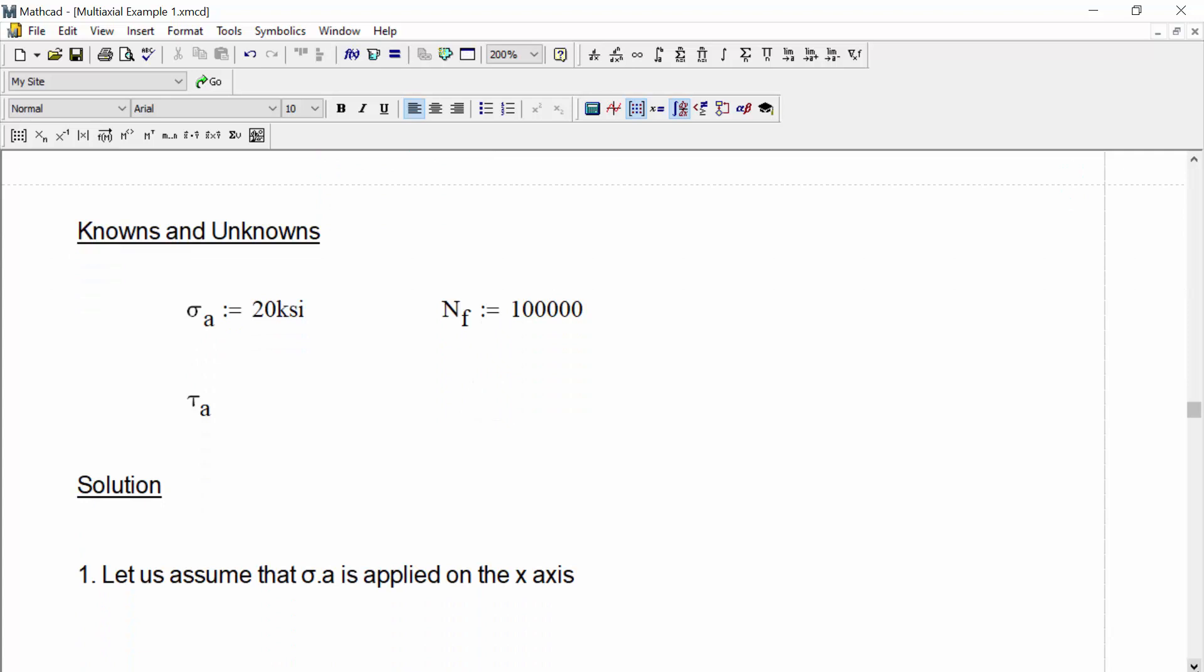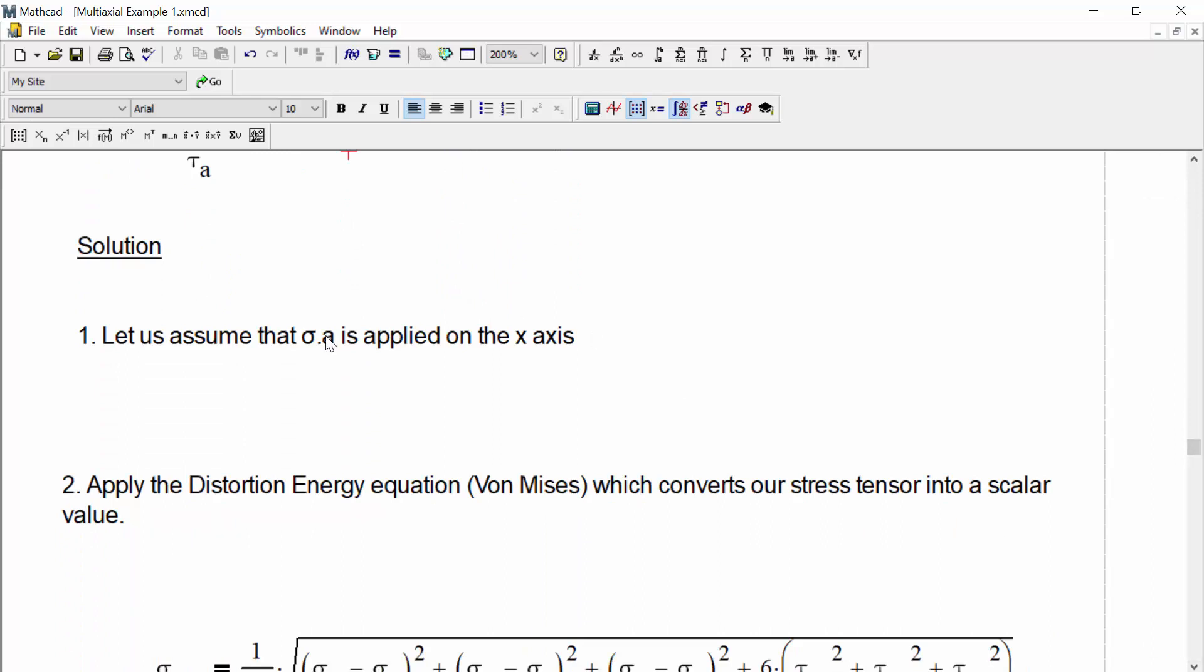Now let's get started actually solving this problem. Our knowns is that we know the stress amplitude is 20 KSI and that our cycles to failure is 100,000 cycles. Our unknown is the shear stress amplitude tau A, which is going to give us an equivalent life to the normal stress amplitude of 20 KSI. So our solution, let's first assume that this stress amplitude is applied on the x-axis.